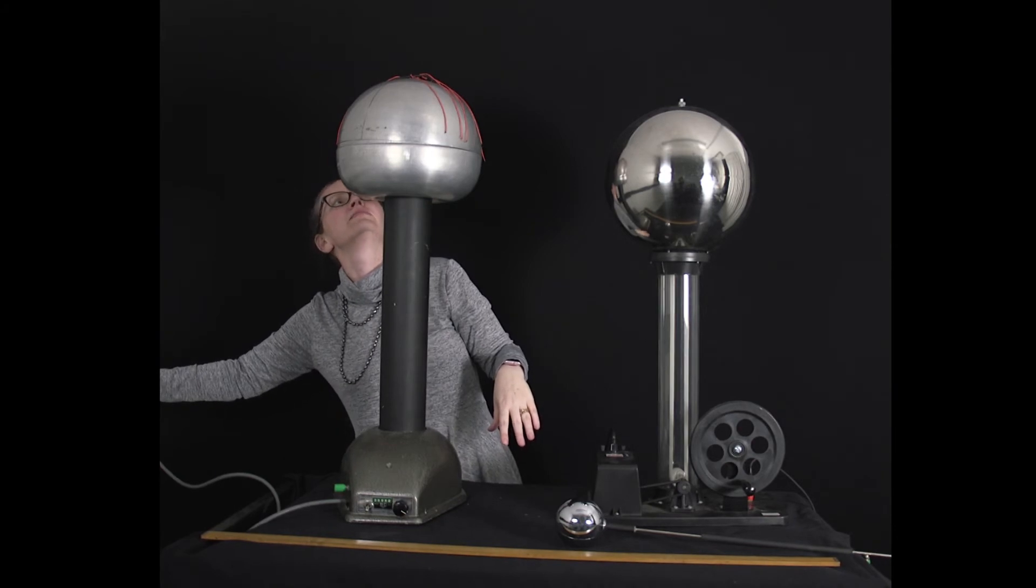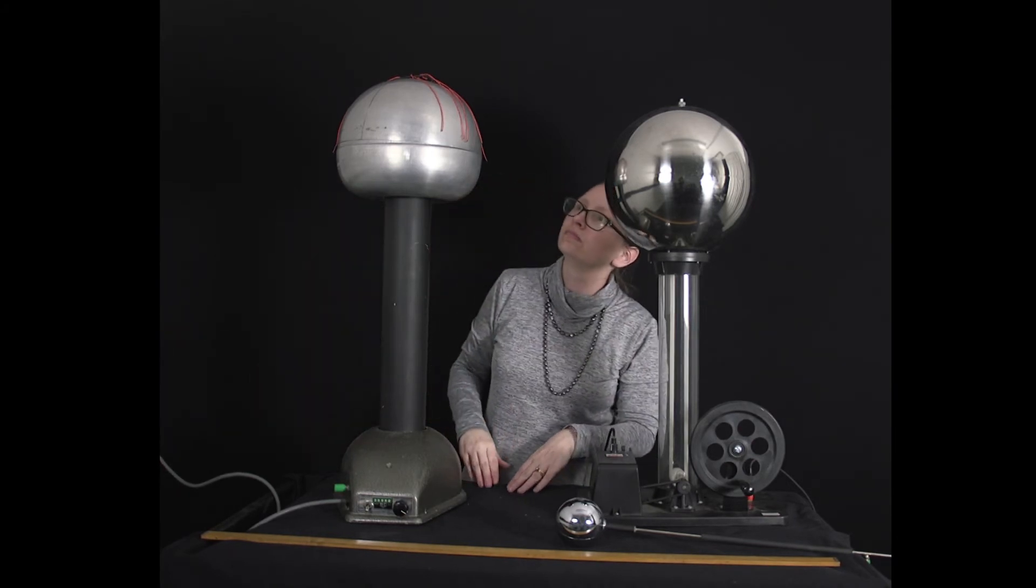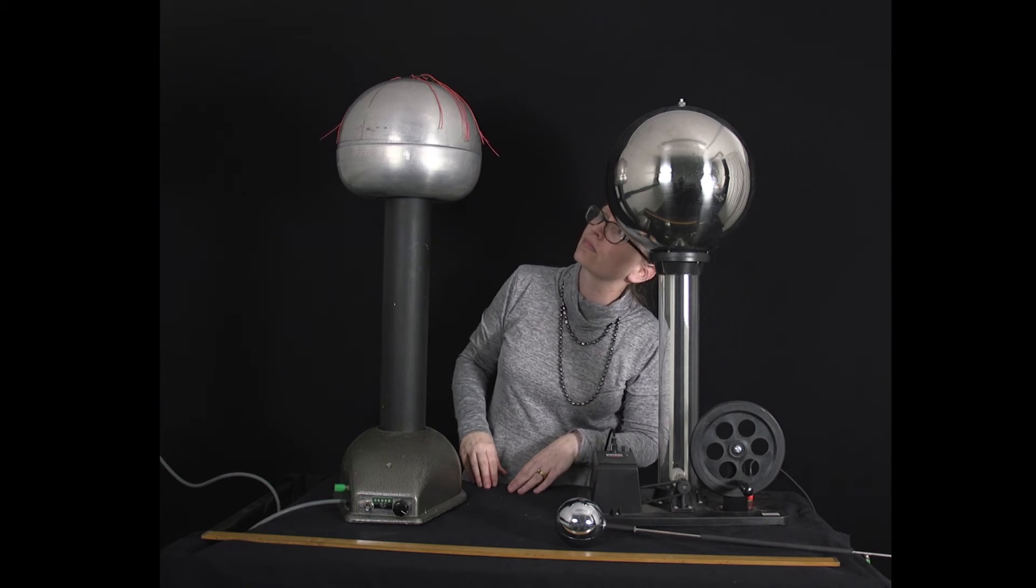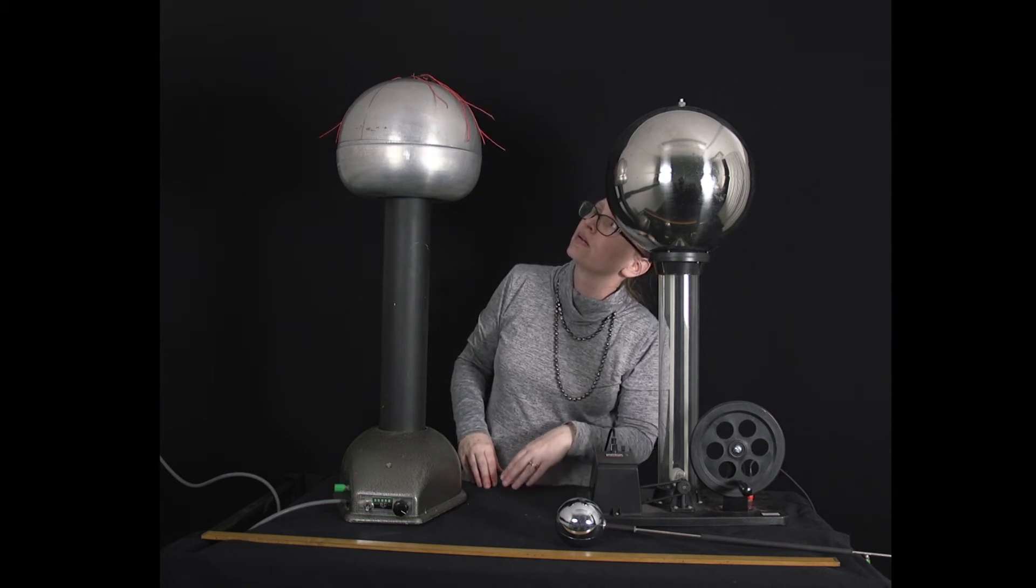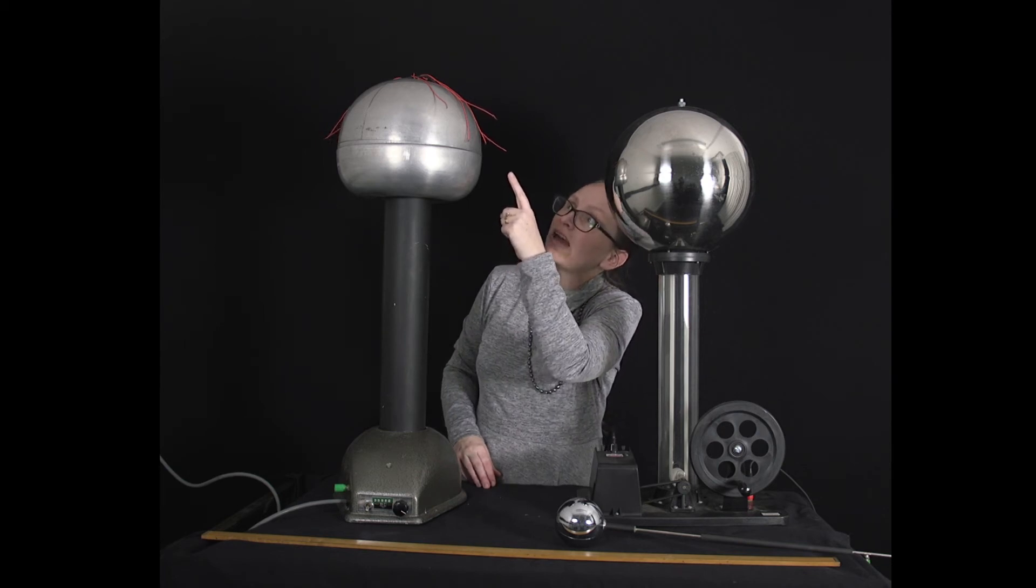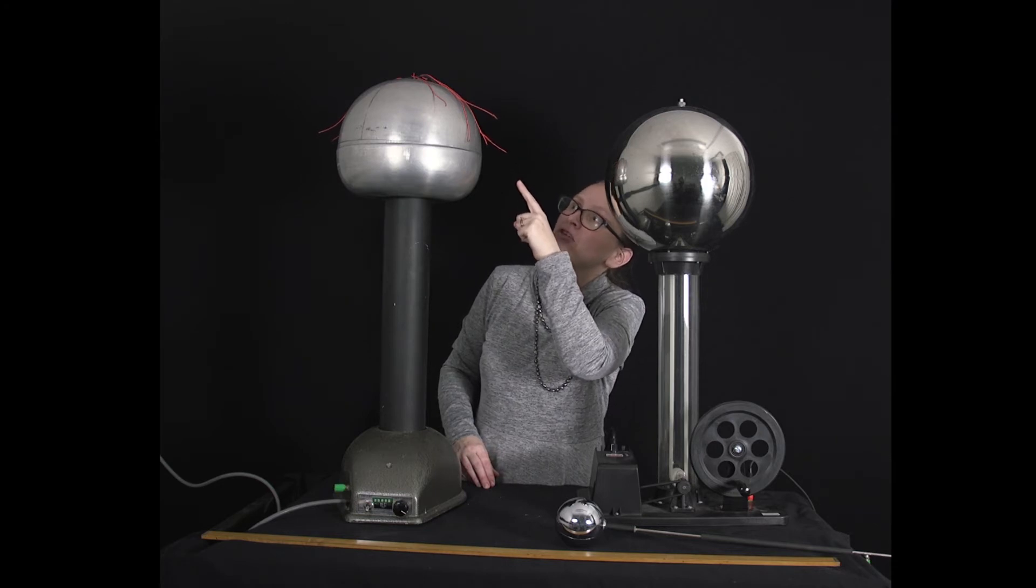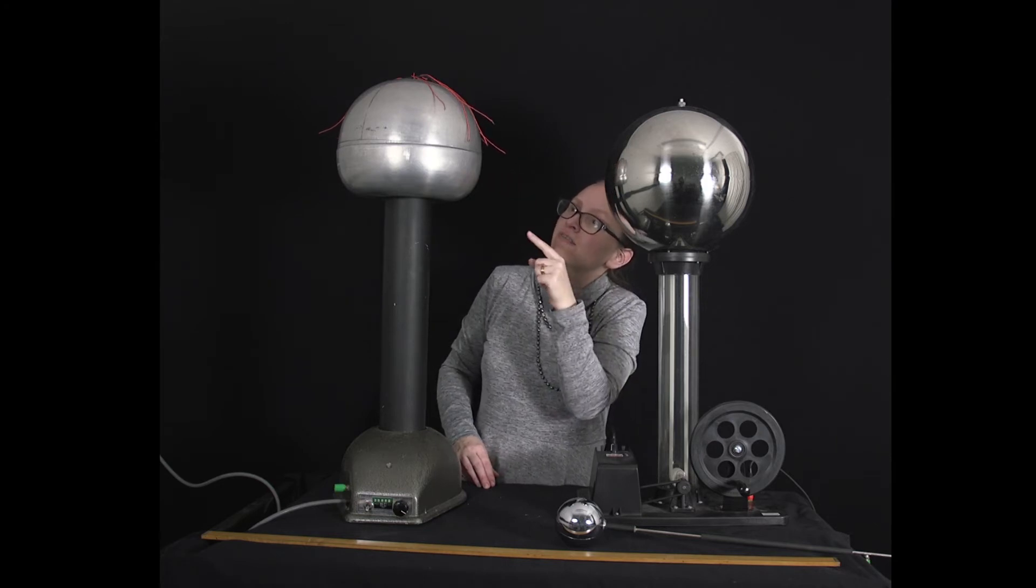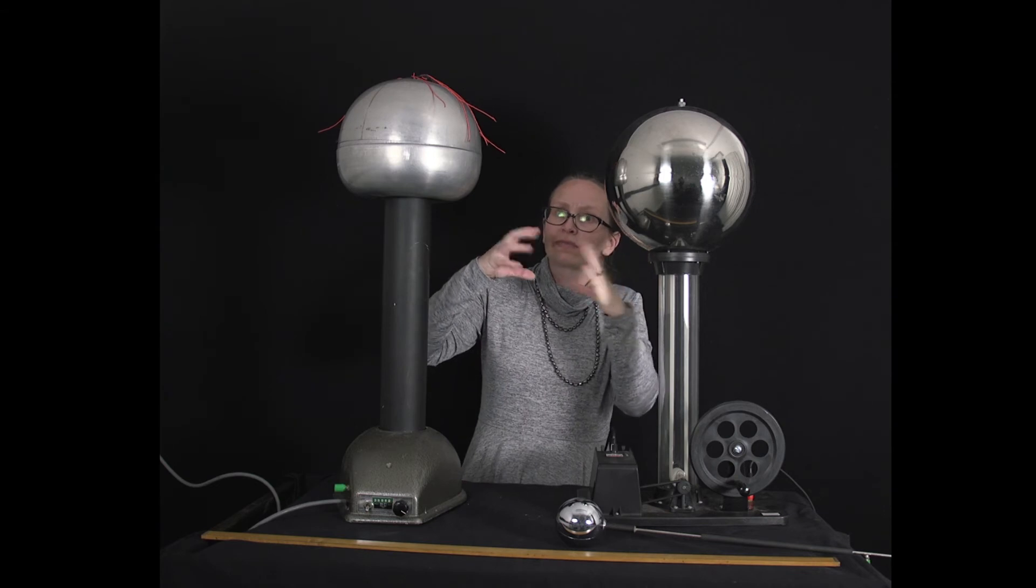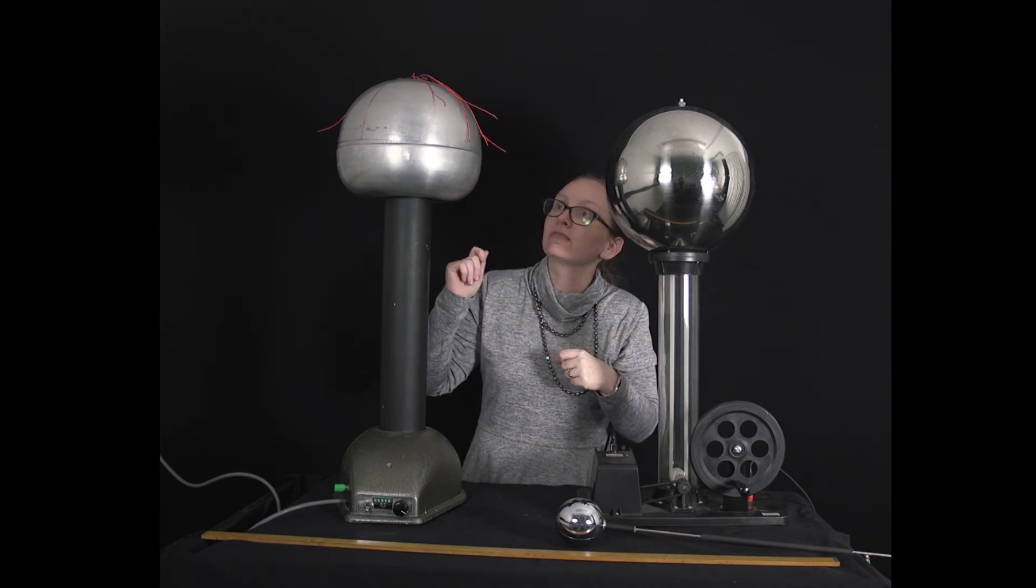When we turn it on, you can see that the strings are standing on end, and that's because the electrons are being pulled out of the strings into the sphere so that we can get more and more electrons close to that very positive roller.